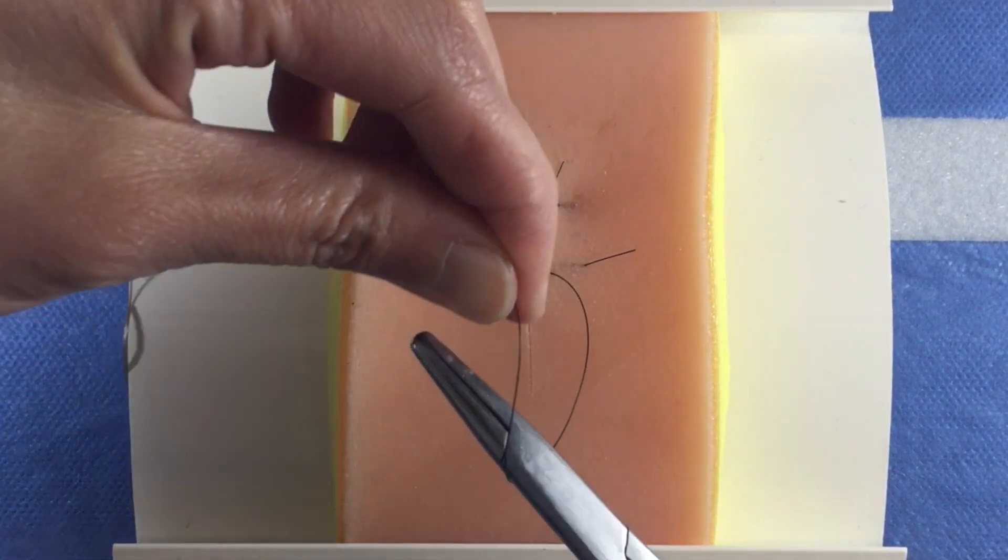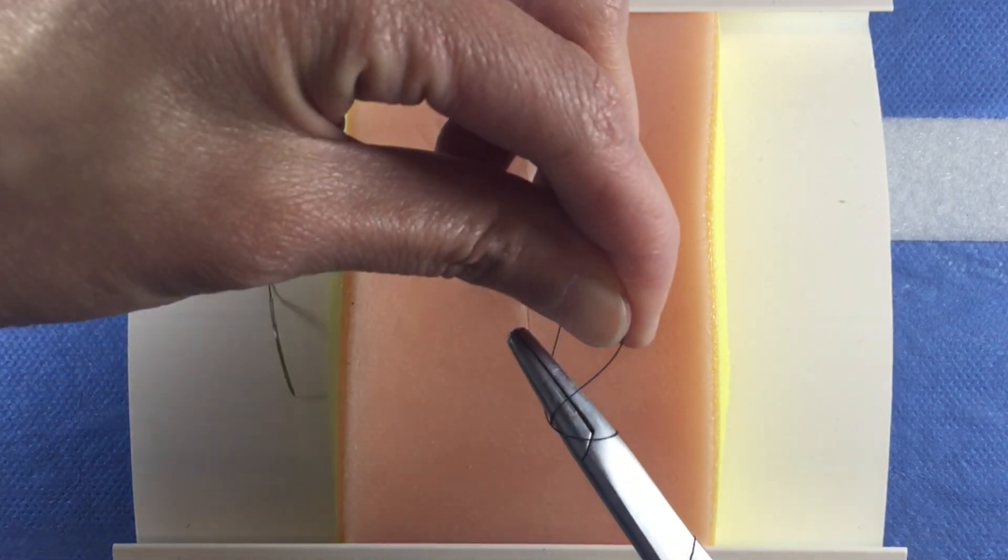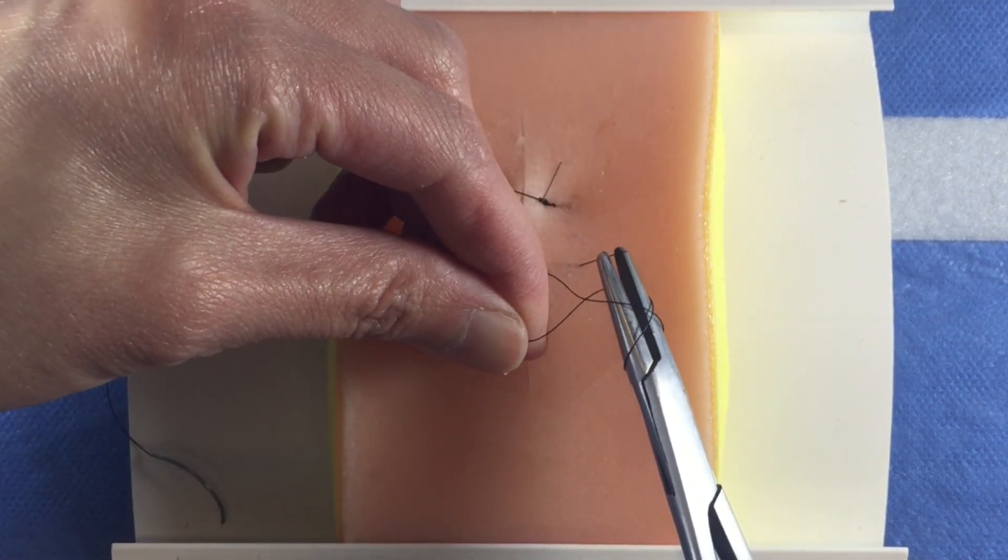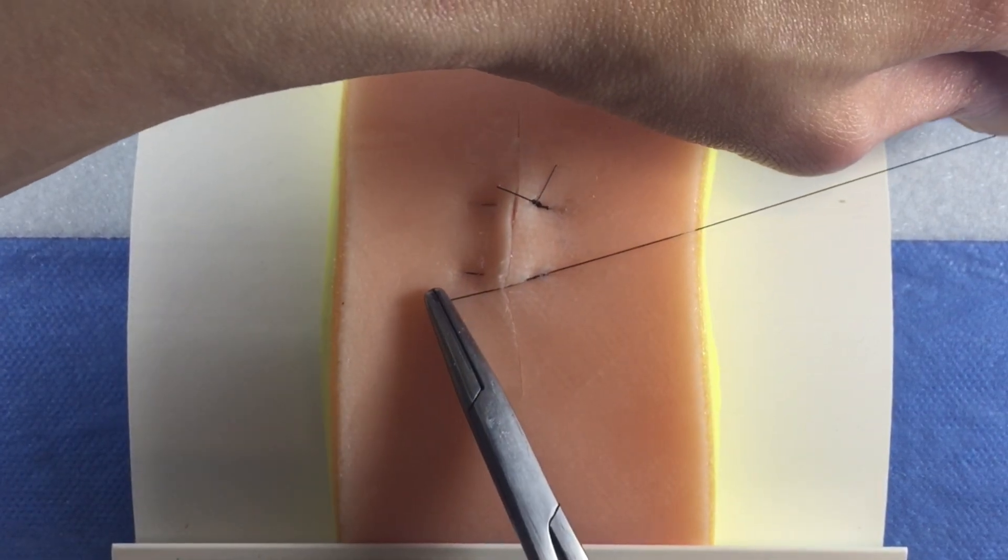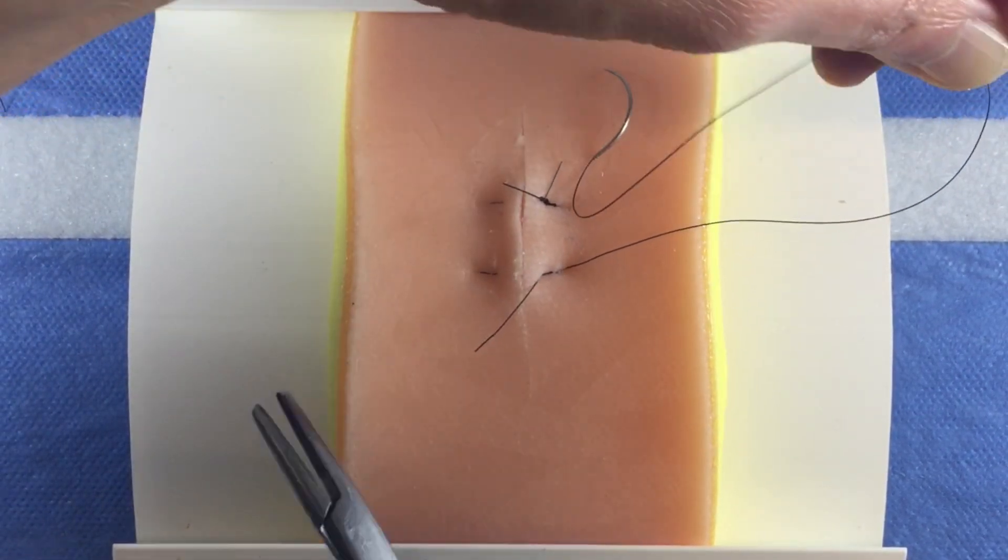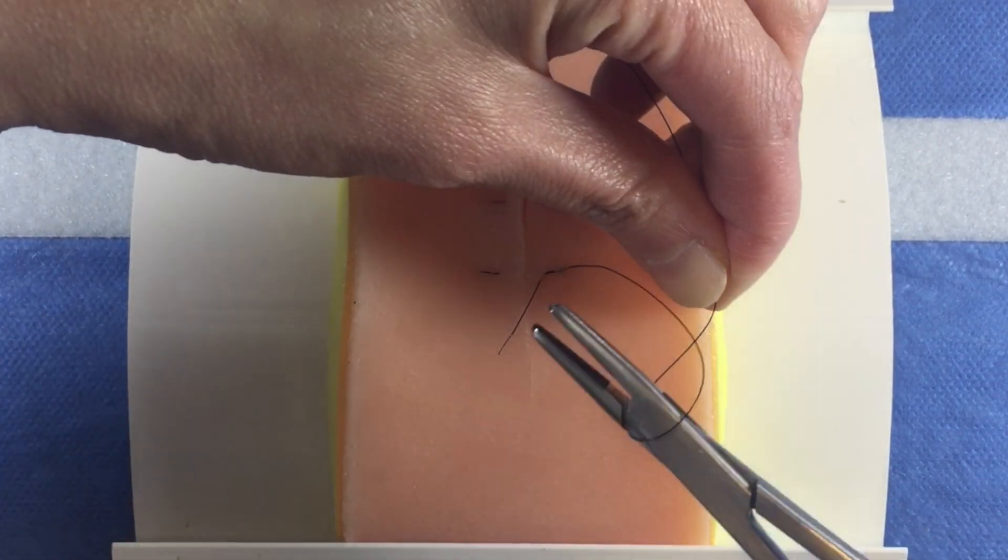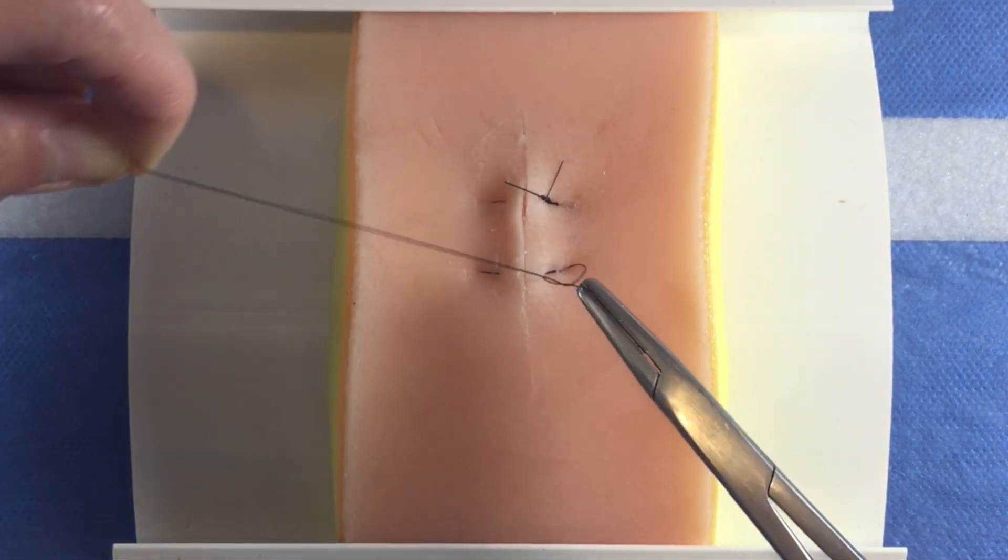Then, tie the suture strands together. Note that there may be significant tension requiring you to place a surgeon's knot or several slip knots in order to make the closure snug. But also remember to approximate, not strangulate.